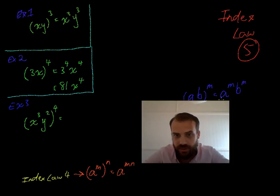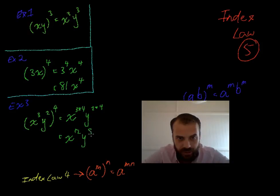And we also know that index law 5 says that we can treat each of the ones in the brackets as their own law. So, now we've got x to the 3 to the power of 4, and y to the 2 to the power of 4. Using index law 5, in conjunction with index law 4, we get x 3 times 4, y 2 times 4. That will be x to the 12, and y to the 8.